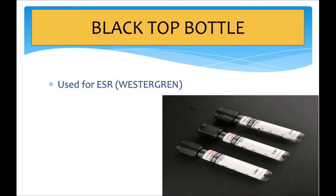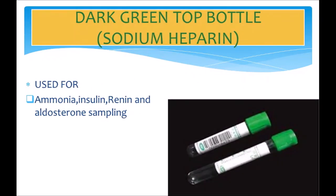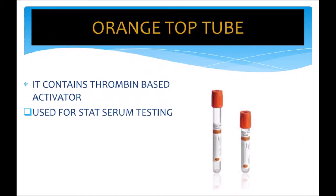Next we have the dark green top bottle, which contains sodium heparin as an anticoagulant. It is used for plasma sampling. The light green top tube is also used for chemistry purposes and contains a plasma separating additive.